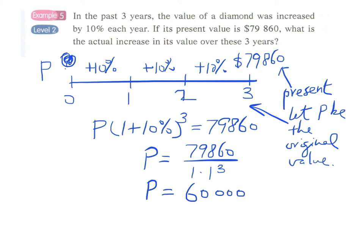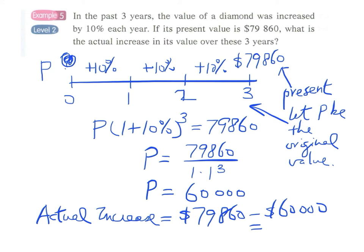The actual increase in value will be $79,860 minus $60,000, and this will be $19,860. So this is the final answer.